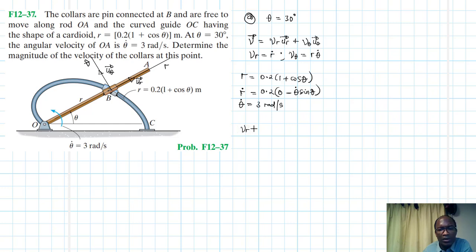V_r equals Ṙ, which equals -0.2·θ̇·sin θ.